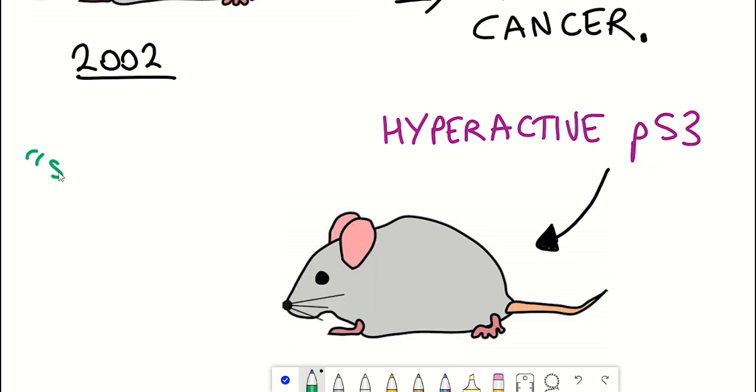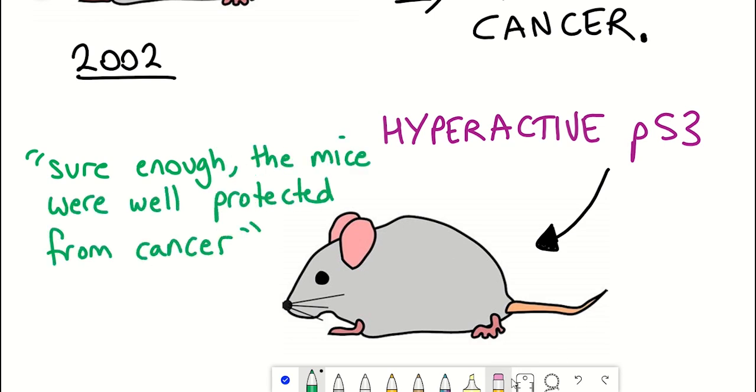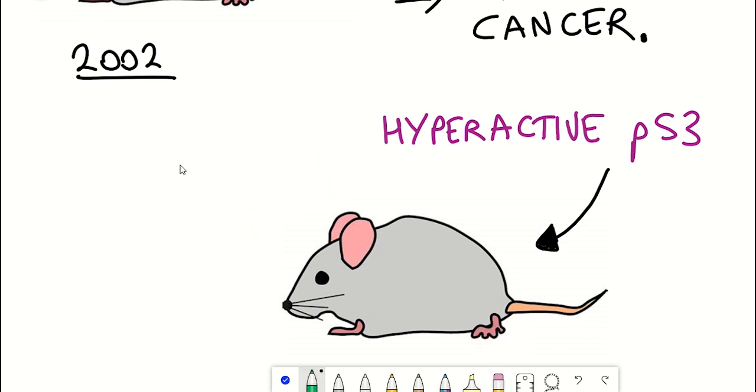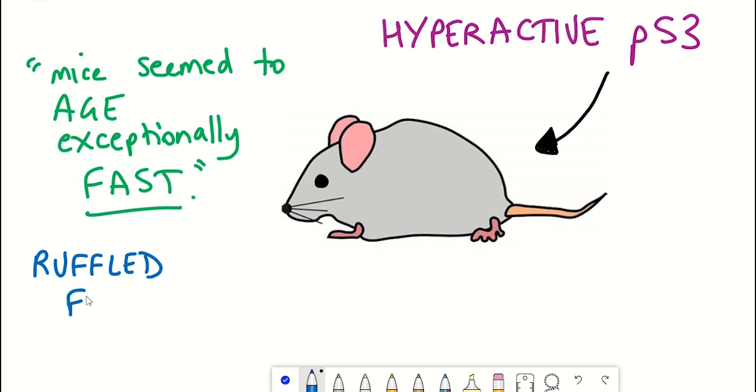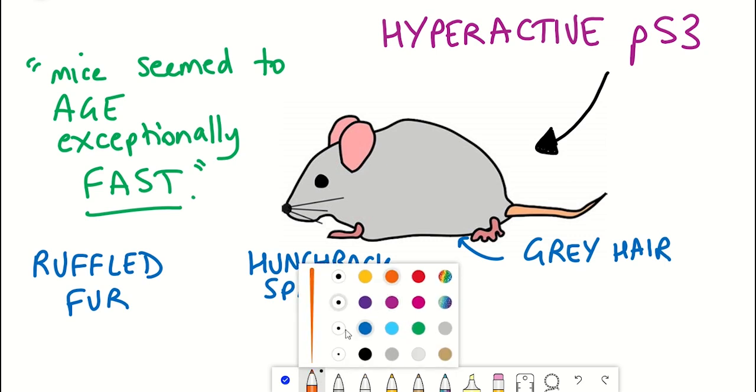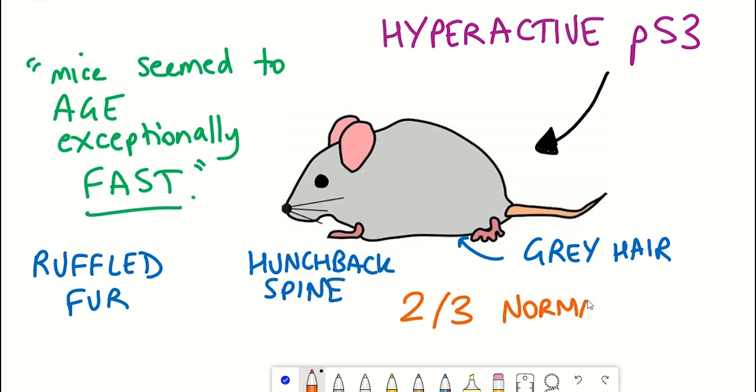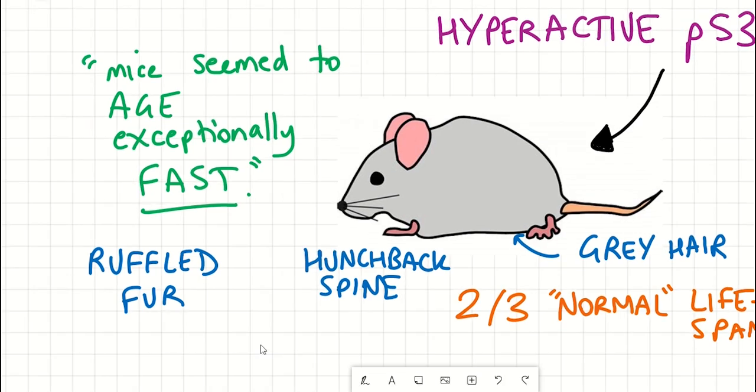And so according to the book sure enough the mice were well protected from cancer. But what was very surprising was that the mice seemed to age exceptionally fast. In just a few months they looked like very old mice. They had hunchback spines, ruffled fur, grey hair, things like that according to Larry. And they lived only about two-thirds of their normal lifespan.